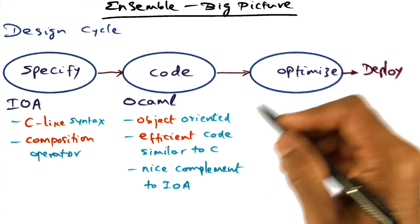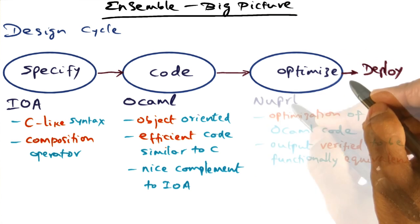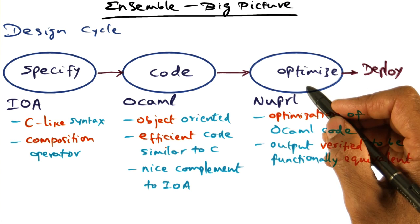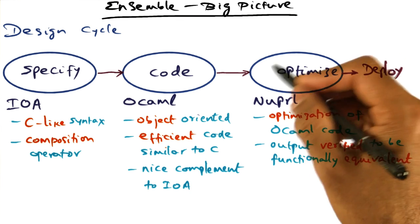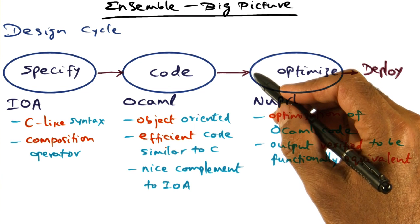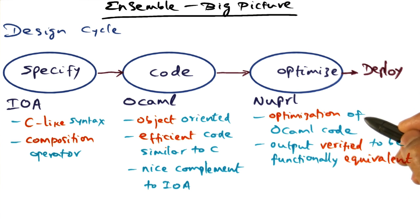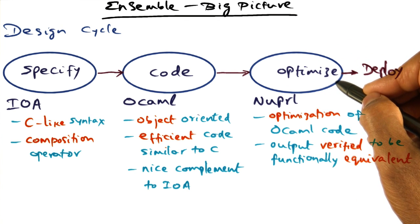Now how do we do that? Well, once again, we turn to theory. Nuprl is a theoretical framework for optimization of OCaml code. The input to this framework is the OCaml code, and the output that you get is an optimized version of a functionally equivalent OCaml code. So that's what this optimization framework gives you.